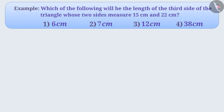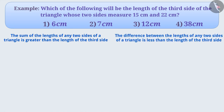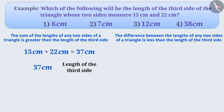Next example: which of the following will be the length of the third side of the triangle whose two sides measure 15 cm and 22 cm? The sum of the lengths of the two sides of a triangle is greater than the length of the third side. But the difference between the two sides of a triangle is less than the length of the third side. Here, the sum of the two sides is 15 cm plus 22 cm, which equals 37 cm. Therefore, the length of the third side should be less than 37 cm, so it cannot be 38 cm.